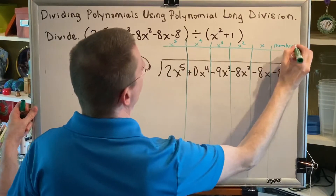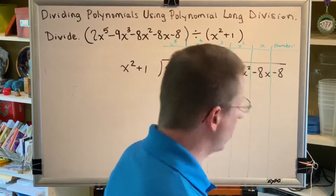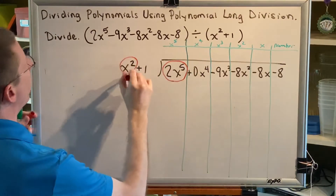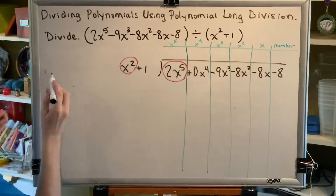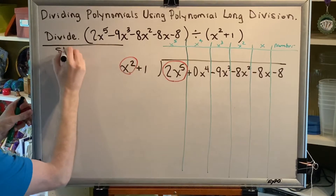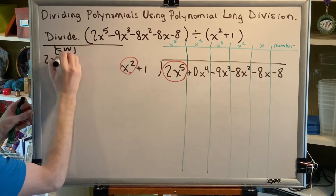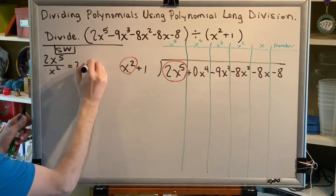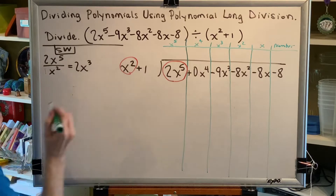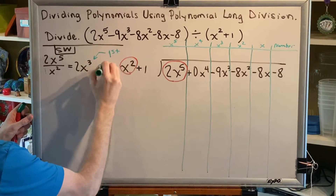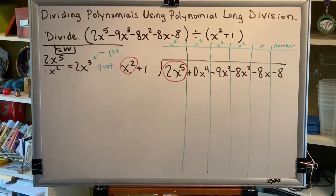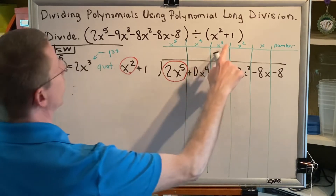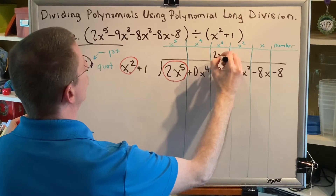Now that we have set up our problem, we're ready to begin polynomial long division. We take the first term of the lowest under and divide it by the first term of the denominator — we'll do that in our side workspace. So we write 2x to the fifth divided by x squared, which equals 2x cubed. This is the first piece of our quotient, so we put it above the division bar in the appropriate column. The variable part is x cubed, so it goes in the x cubed column: 2x cubed.